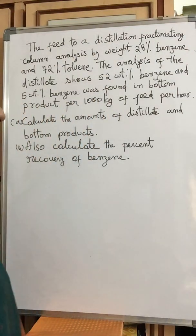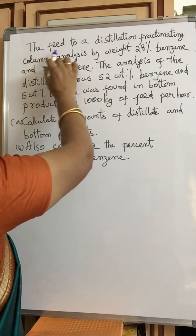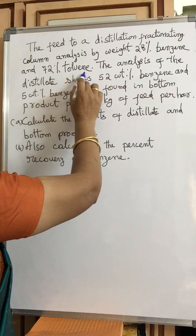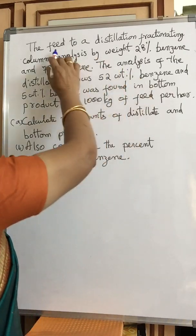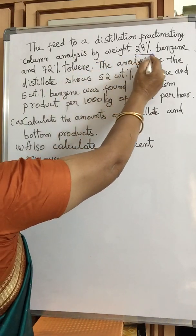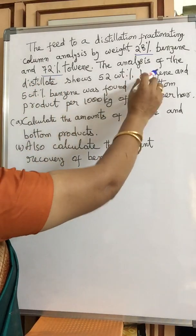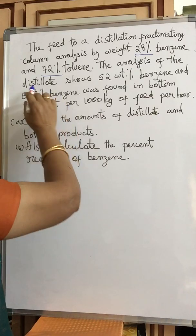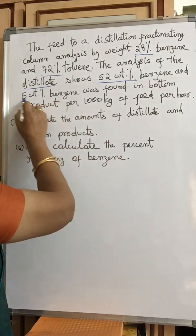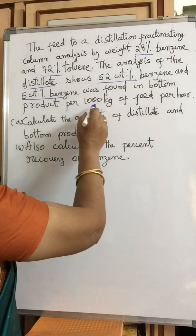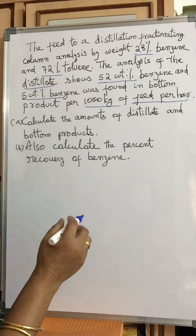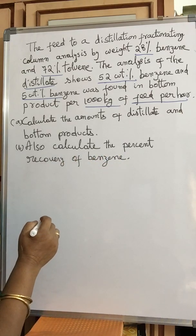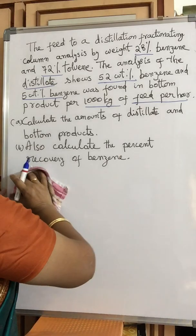We'll solve one problem in distillation. The feed to a distillation fractionating column analyzes by weight 28% benzene and 72% toluene. The distillate shows 52 weight percent benzene, and 5% benzene was found in the bottom product. The feed rate is 1000 kg per hour. We need to calculate the amounts of distillate and bottom products and the percentage recovery of benzene.